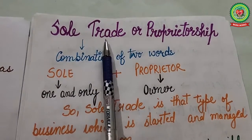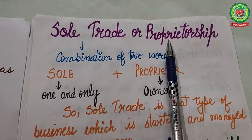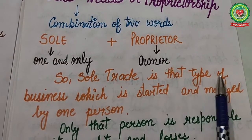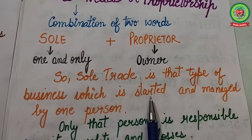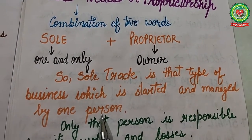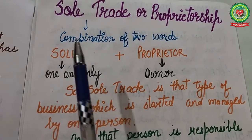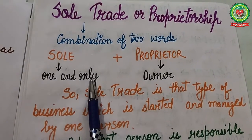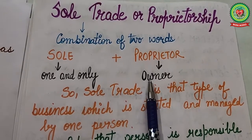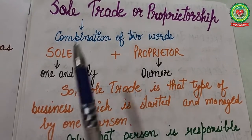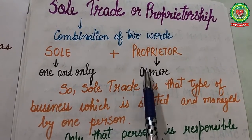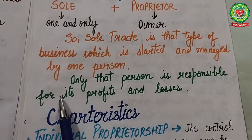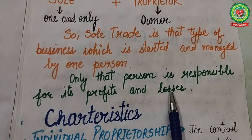We can say that a sole trading business is any business which has only one owner, and the owner of such a business is called a sole trader. Sole trade business is that type of business which is started and managed by one person. That person is called sole proprietor — 'sole' means one and only, and 'proprietor' means owner. He is the only owner of his business and is responsible for its profits and losses.